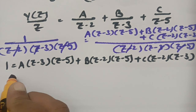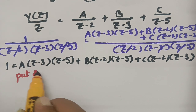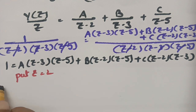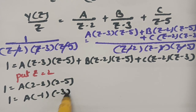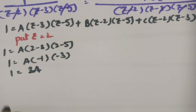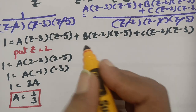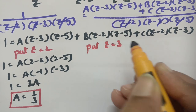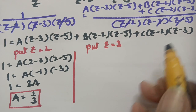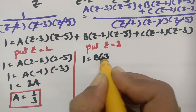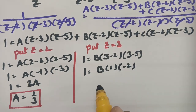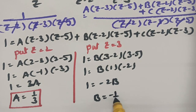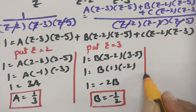To find A, put z = 2: 1 = A·(2 - 3)(2 - 5) = A·(-1)(-3) = 3A, so A = 1/3. To find B, put z = 3: 1 = B·(3 - 2)(3 - 5) = B·(1)(-2) = -2B, so B = -1/2.